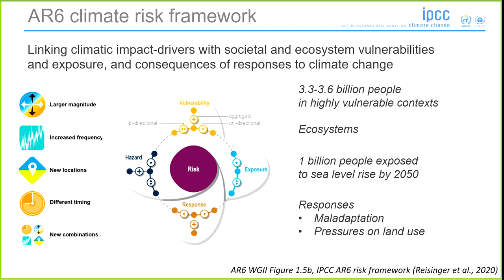When you talk about responses, we're thinking about the consequences — for example, of pressures on land, of mitigation actions, and lock-in coming from these responses that can lead to maladaptation. The diagram has become really complicated. You see bidirectional effects going between vulnerability and hazard, unidirectional effects, and effects that aggregate and cascade. This is the framework within which the AR6 assessed risk.